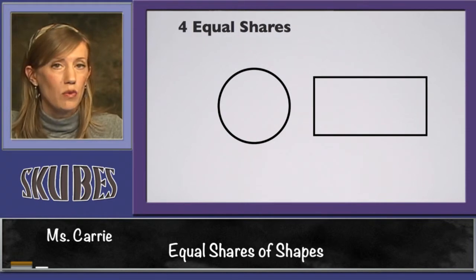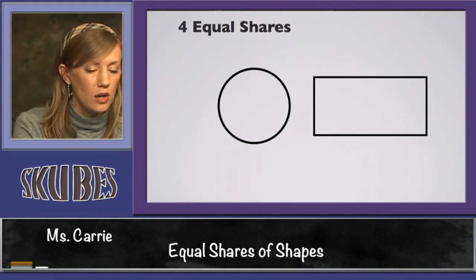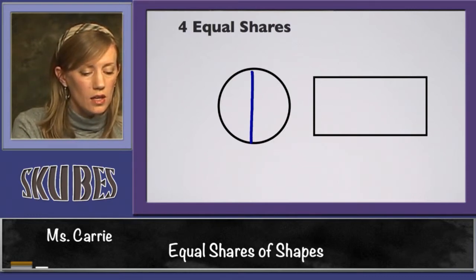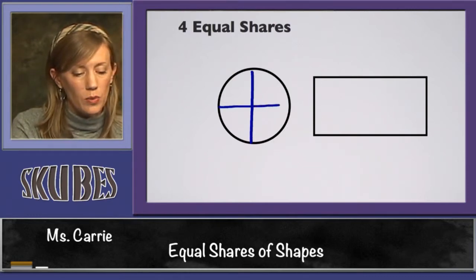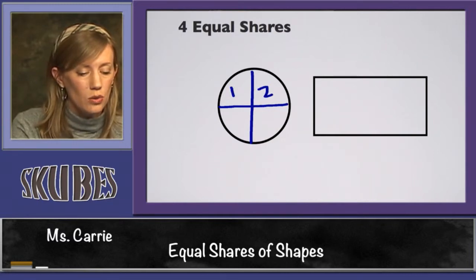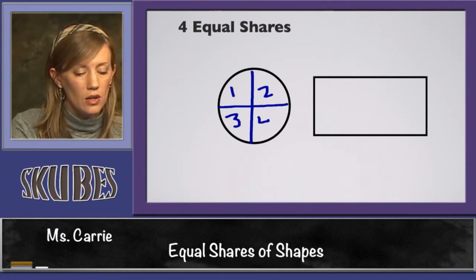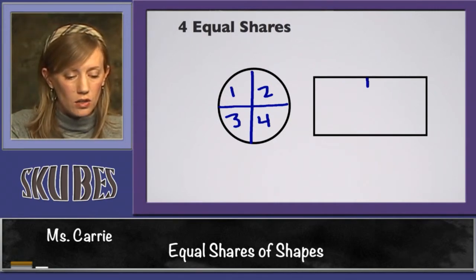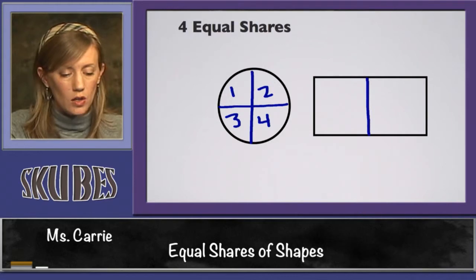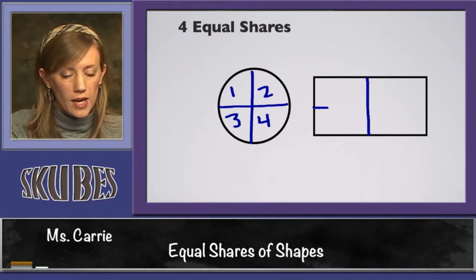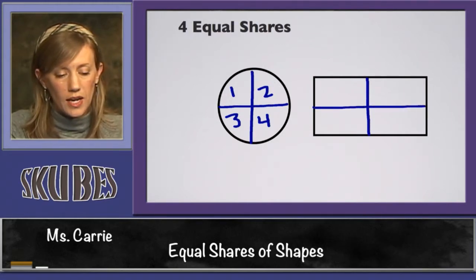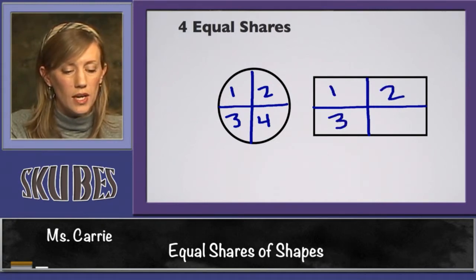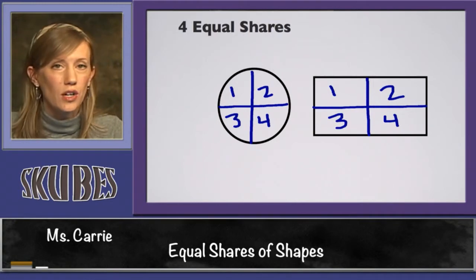Now let's do the same thing, but with four equal shares. Remember what we did here on the other slide — we divided it this way and then we divided it this way into one, two, three, four equal shares that are the same size. Now we can take the rectangle and do the same thing. We can divide it this way and we can divide it this way, and that gives us one, two, three, four equal shares that are the same.